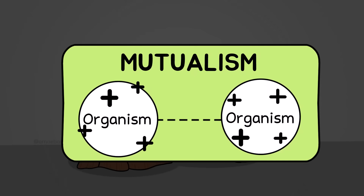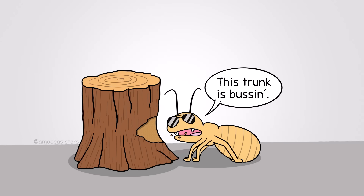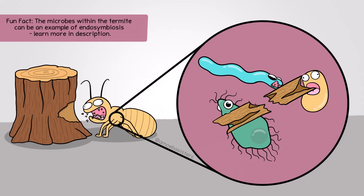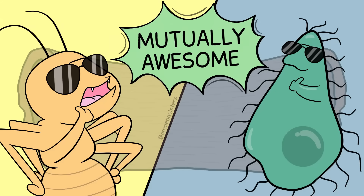In mutualism, both organisms benefit. Want a really cool example? Bring back the termite. Inside a termite are microscopic organisms like bacteria or protists that have the ability to break down wood — great for the termite's digestion, since wood is hard to break down. In return, the microorganisms get a place to live and a steady flow of a food source.